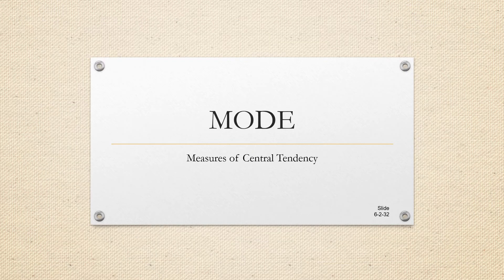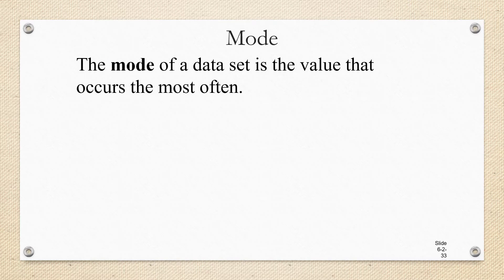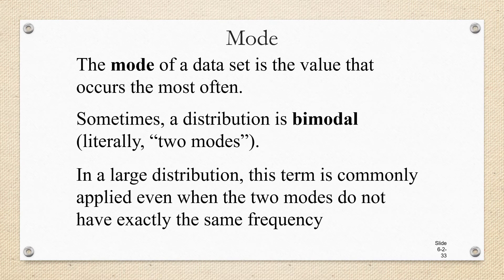Let's talk about mode. The mode of a data set is the value that occurs the most often. Sometimes a distribution is bimodal, which means it has two modes. So two different data values are kind of tied for first place in the number of times they appear in the data set.